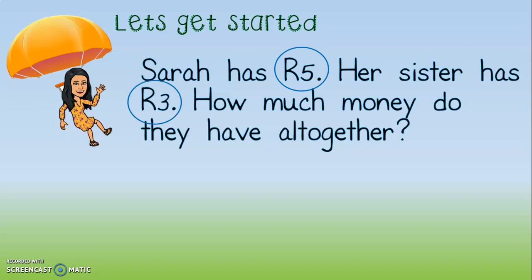Well done. The next thing we need to remember is to circle the word that tells us whether it's a plus sum or a minus sum. Which word tells us? That's right — the word 'altogether.' Altogether means it's going to be a plus sum. The next step is to write out our sum.